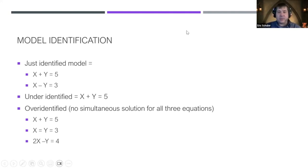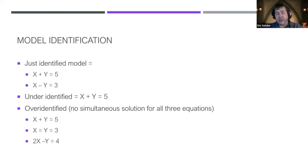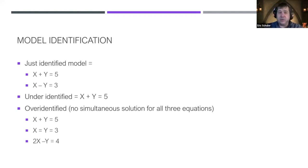Think of it this way: a just-identified model is like having two equations with two unknowns — you can solve it but can't test alternatives. For model identification, you want at minimum three items per construct, but more realistically five, so that if you have one bad item you still have enough to identify the construct.